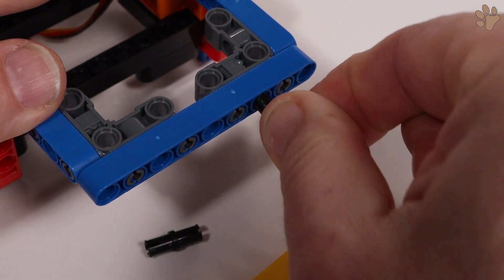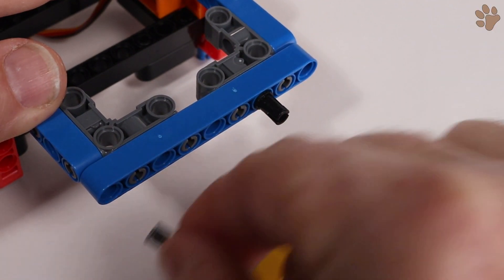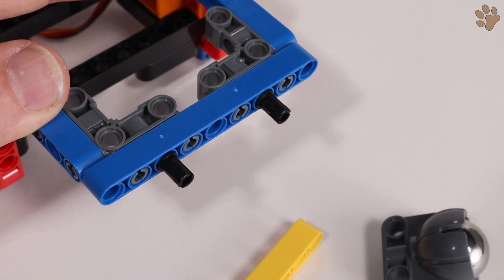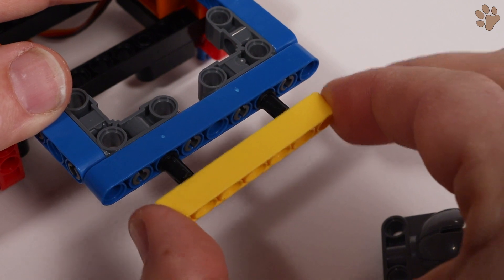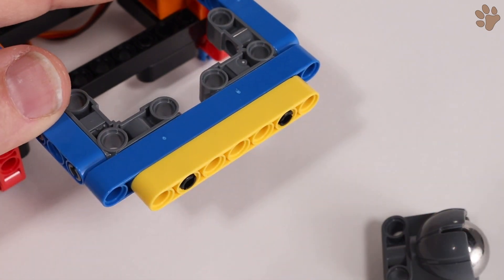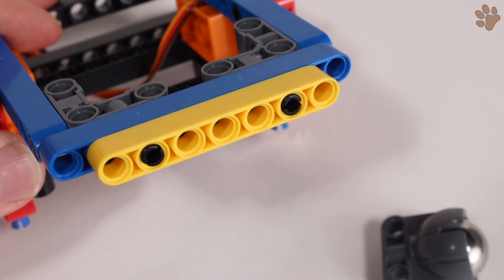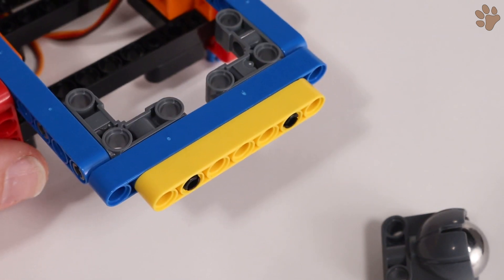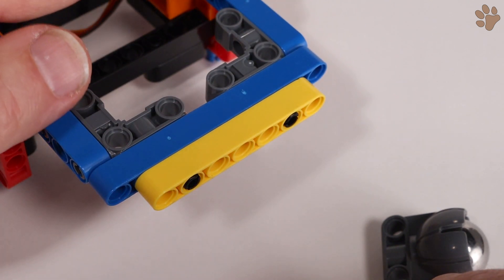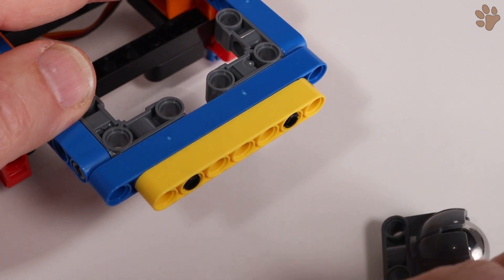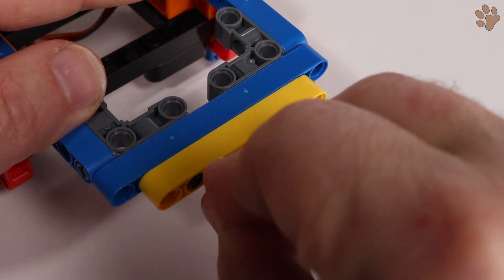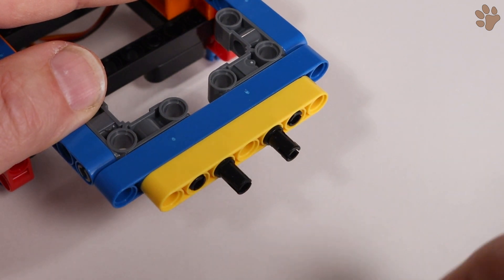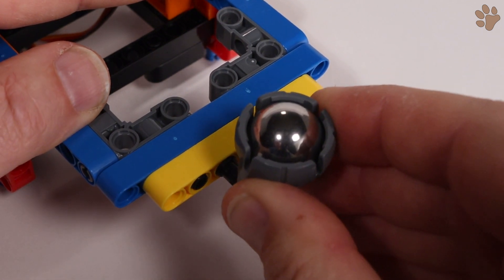Place two pins into the beam we just added in the third hole from each end. After adding the pins, you can attach the final rear beam. Add two more pins in the third hole from each end. Press the caster wheel into place.